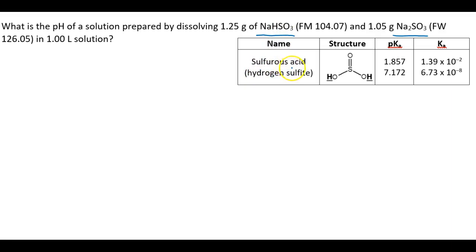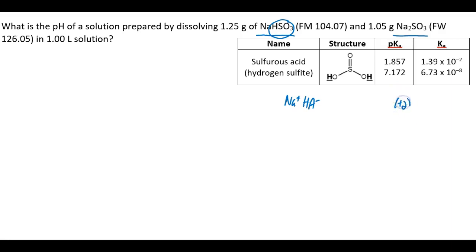We've got the name of the neutral form, the structure of the fully protonated form, and the pKa's and Ka's. Looking at these solutes: if sodium is a plus, the counter ion must be a minus, so this solute would be HA minus. And for the other one, we've got two sodiums giving plus two, so the counter ion must be minus two — that's A minus 2. So we've got a buffer containing HA minus and A2 minus.